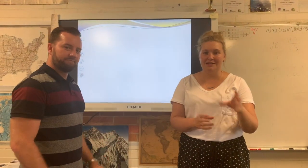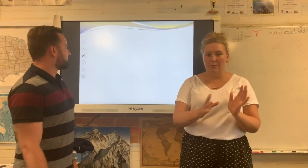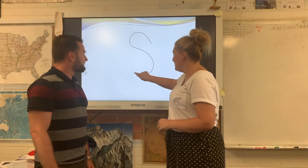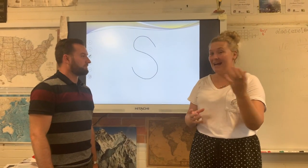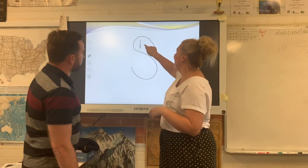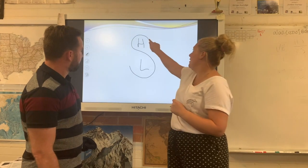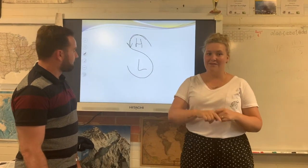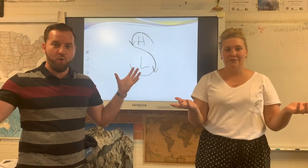A little trick to remember which ones go anti-clockwise and which ones go clockwise in the southern hemisphere: draw an S for southern hemisphere, then think of high and low. H comes before L in the alphabet, so put H at the top and L at the bottom of the S. High goes anti-clockwise and the L goes clockwise. Just reverse it for the northern hemisphere.